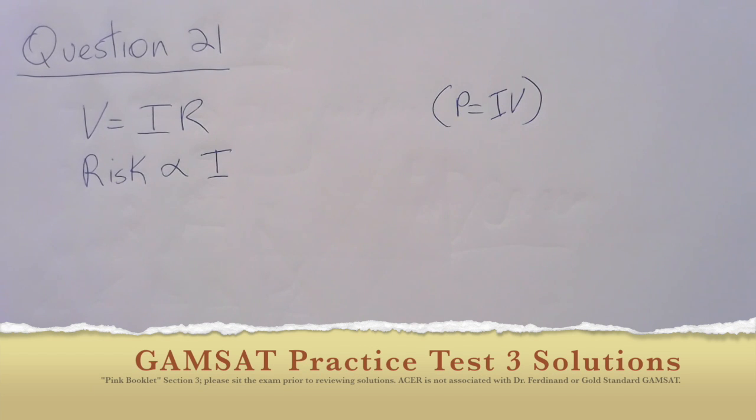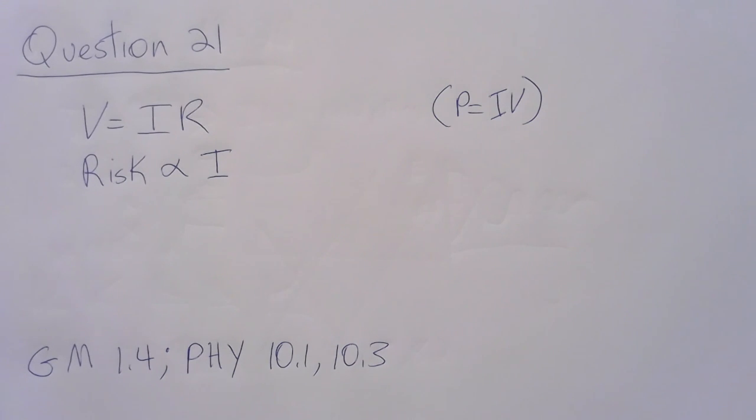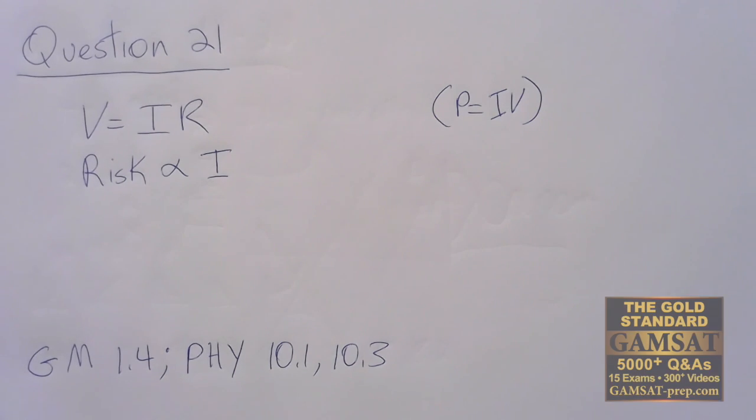Question 21. This is a quick and easy question, but you need to know a basic equation, which is Ohm's Law. Very famous, comes up on the exam regularly in many different contexts. V equals IR—voltage equals current times resistance.